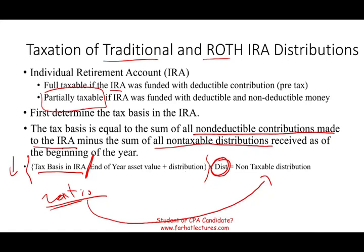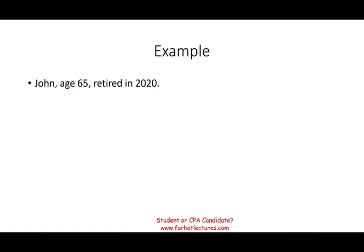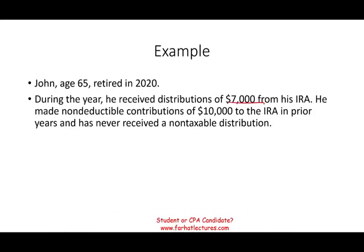The best way to illustrate this is working an actual example. John, age 65, retired in 2020. During the year he received $7,000 from his IRA. The question is: is the $7,000 fully taxable or not? If John funded all his IRA with deductible money — money that avoided taxes — then the full amount is taxable. That would be the easy answer.